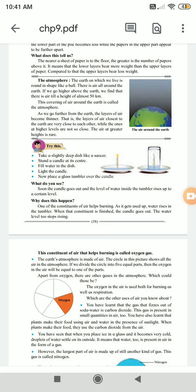What do you see? Soon the candle goes out and the level of water inside the tumbler rises up at a certain level. Why does this happen? One of the constituents of air helps burning. As it gets used up, water rises in the tumbler. When that constituent is finished, the candle goes out. The water level too stops rising.